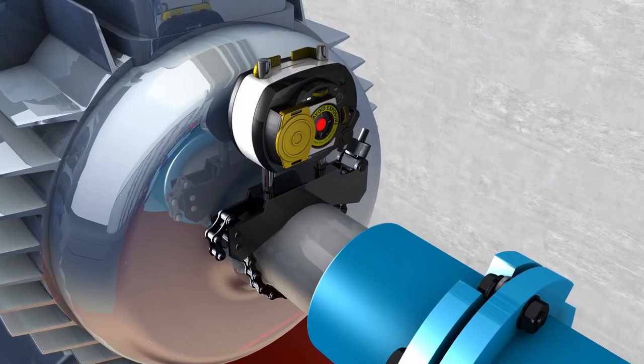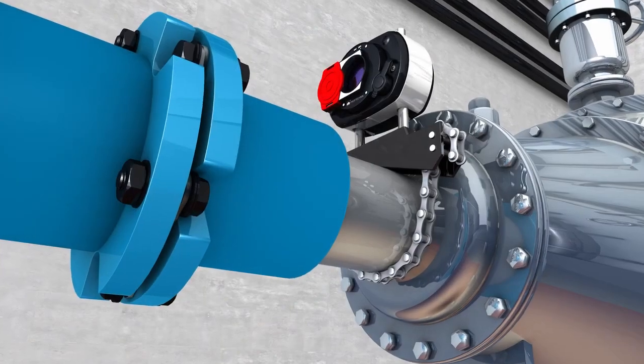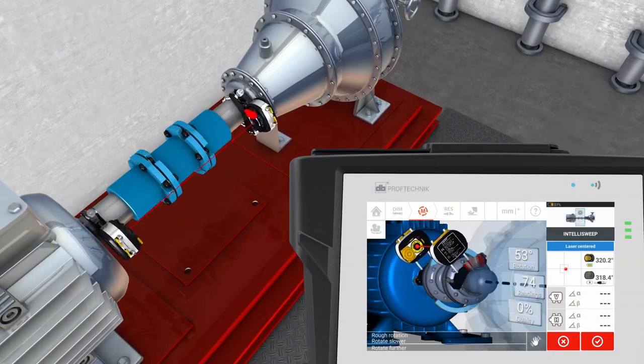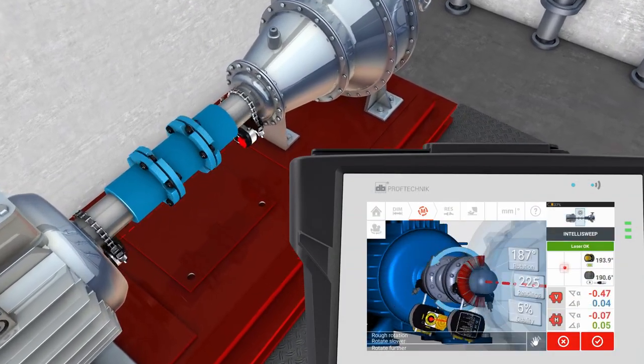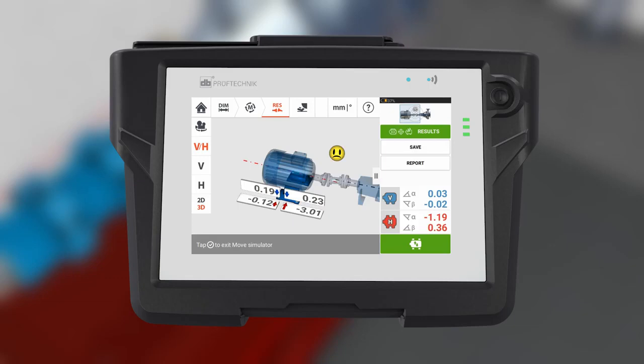In this situation, a common oversight is to mount the laser on the motor here on the left and the sensor on the pump here on the right. Let's see what happens with this setup. After the measurement, the alignment results appear on the screen of your laser shaft alignment tool. For example, here we have a typical 3 millimeter initial misalignment at the front foot of the motor.